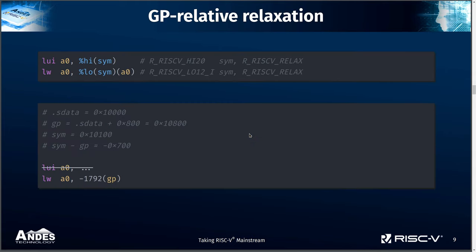Here we have an example to load data from a symbol using LUI and a 12-bit displacement encoded in the immediate of the load instruction. If this symbol is small data and assigned to an address close to the GP pointer — say, negative 700 bytes from GP — we can change the load-word instruction to use the GP register as the base and encode the GP-relative offset into the immediate. Now the address of the symbol is calculated by the load-word instruction itself, and the LUI instruction is now redundant. So the linker can safely remove the LUI instruction, saving 4 bytes and leaving only a single instruction to load the data.